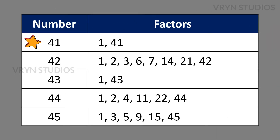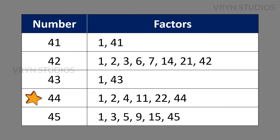The factors for the number 42 is 1, 2, 3, 6, 7, 14, 21 and 42. The factors for the number 43 is 1 and 43. The factors for the number 44 is 1, 2, 4, 11, 22 and 44. The factors for the number 45 is 1, 3, 5, 9, 15 and 45.